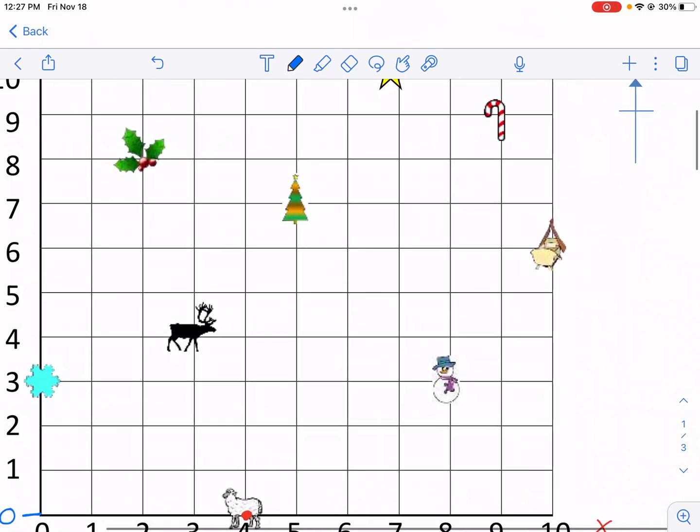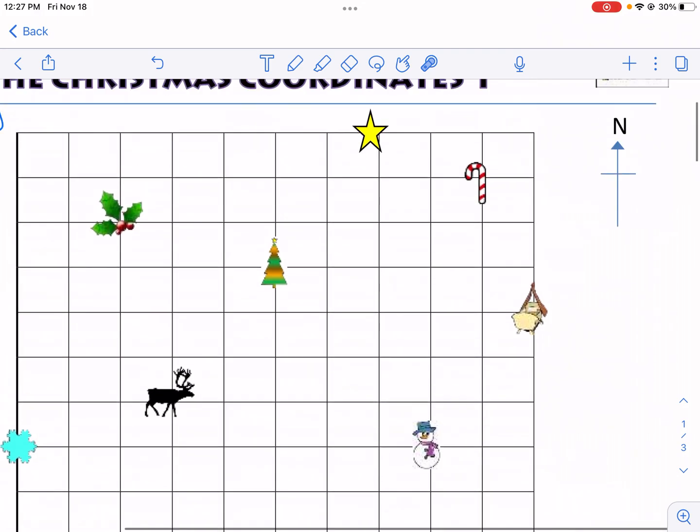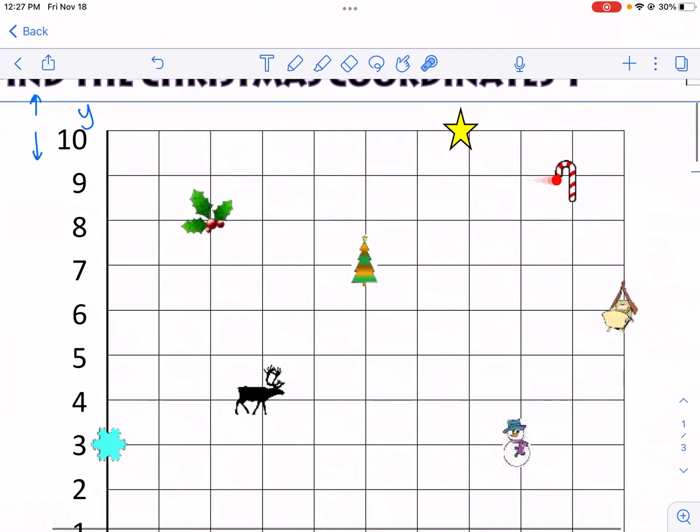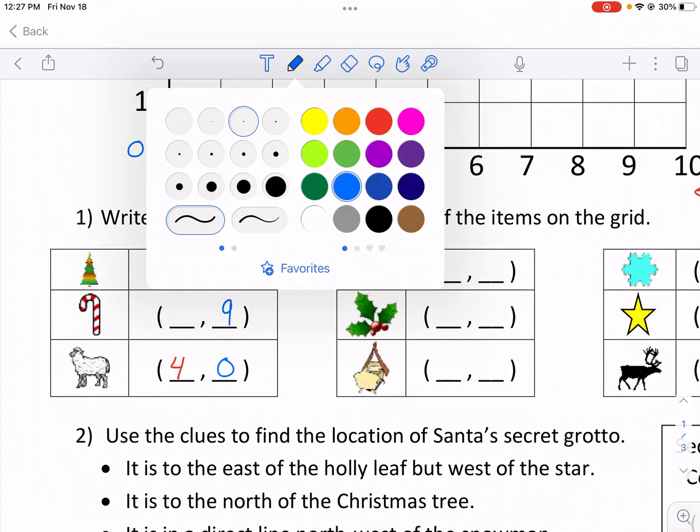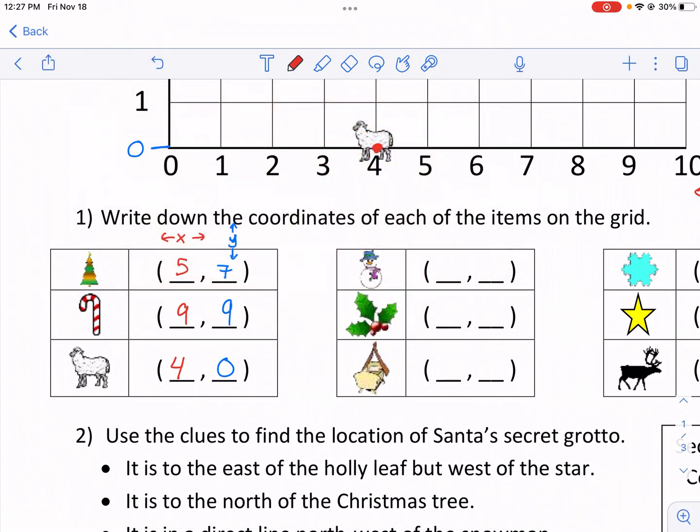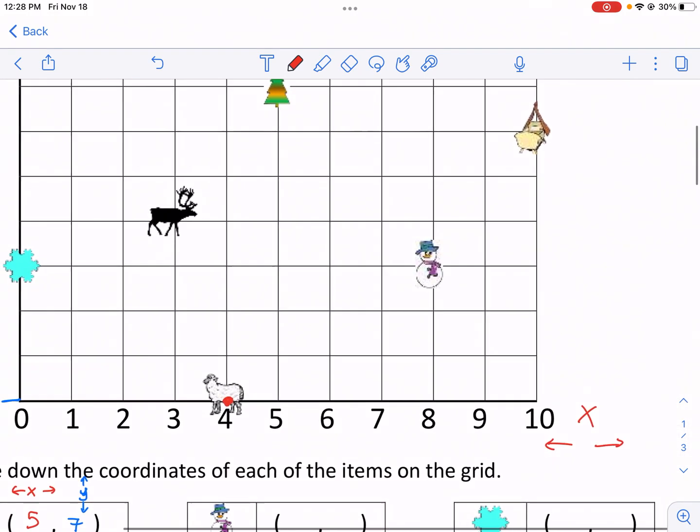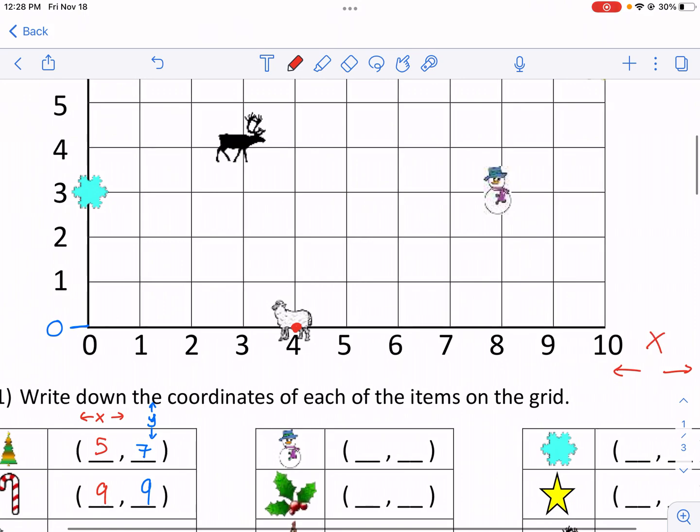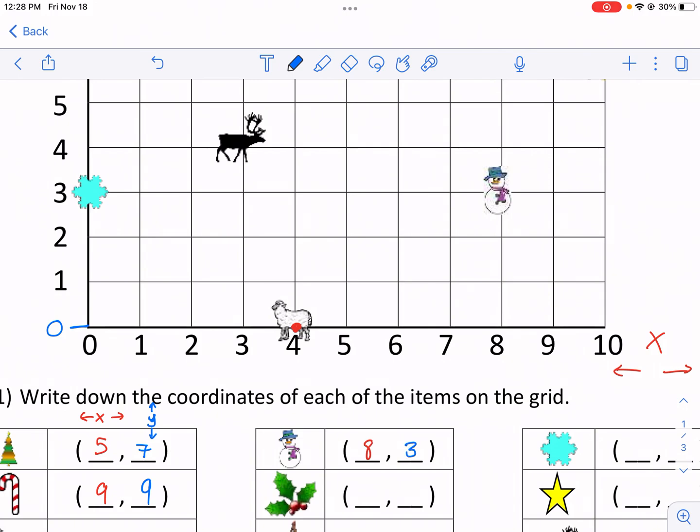Let's find the candy cane next. We can see here it is on the nine for the x, and then it's also on the nine for the y. So this one's just going to be nine, nine. I'm going to write the vertical one first because I already had the blue. Snowman is next. For this one, it is eight, comma, three. Eight for the right, and then three up.